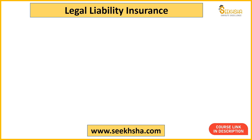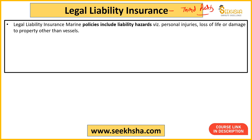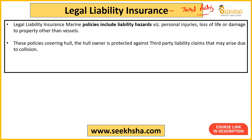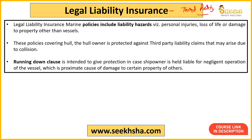Legal liability insurance is a third-party insurance. If there is a third-party loss — personal injury or goods damage — for example, if your ship collides with another ship, you have to pay insurance for the other ship because it was your mistake. This is covered under the running down clause. The running down clause basically provides protection to the ship owner if, due to negligent operation, another person's property is damaged. Like third-party insurance in vehicles, this is your legal liability insurance.